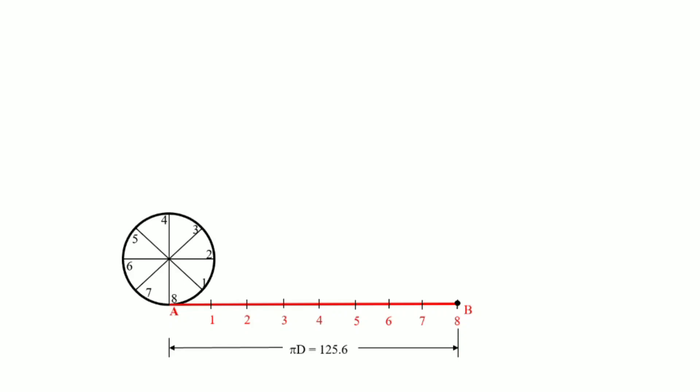When winding this thread along the circumference of the circle, point A is held fixed at point 8 and point B rotates along the circumference, keeping the string tight. Each division on the circumference is exactly equal to one division on the thread length. Point 1 on the thread will overlap with point 1 on the circumference. We will then draw tangent lines to the circle at these respective points.